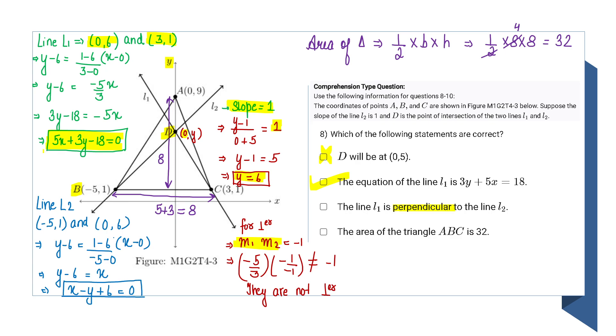So L1's slope will be -5/3. Now for L2, it has two points: D is (0,6) and B is (-5,1). Using the two-point form, you will obtain the equation: x - y + 6 = 0.